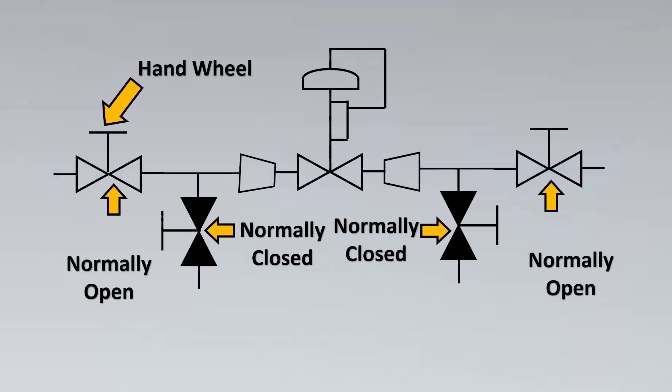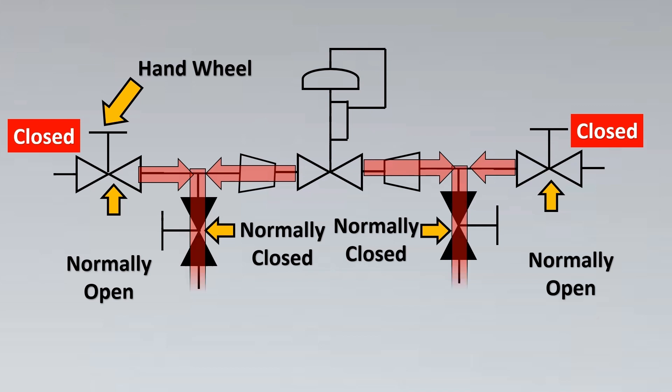Once we close these two valves, there is fluid which is stuck in between, right? So in order to isolate the control valve, then we will have to drain it off. So these normally closed valves then will be opened and that would drain all the liquid out, and then we can safely remove the control valve out from the service.